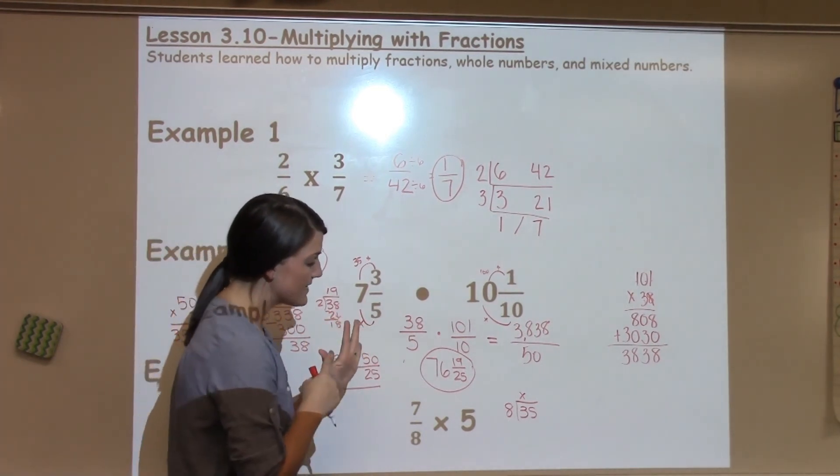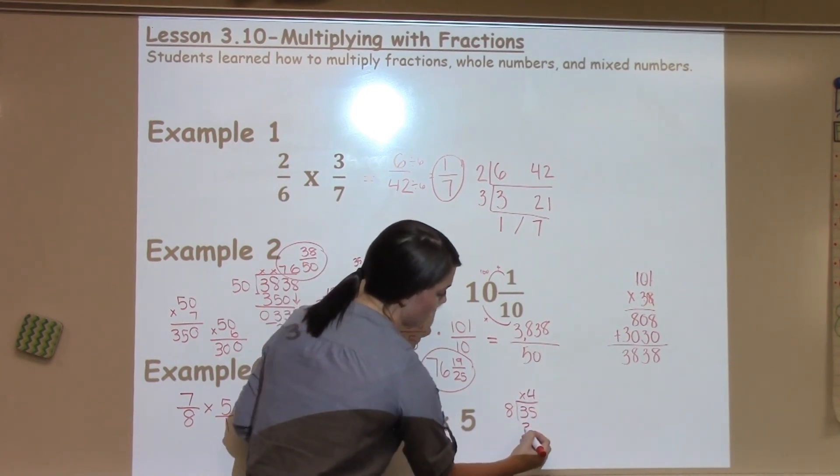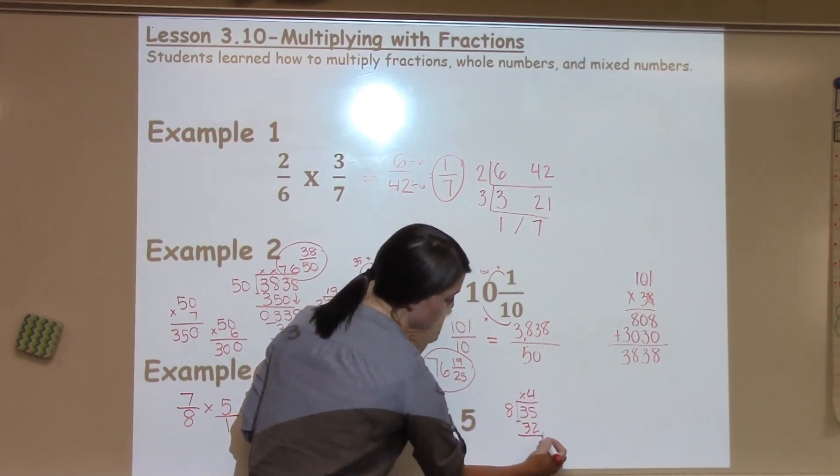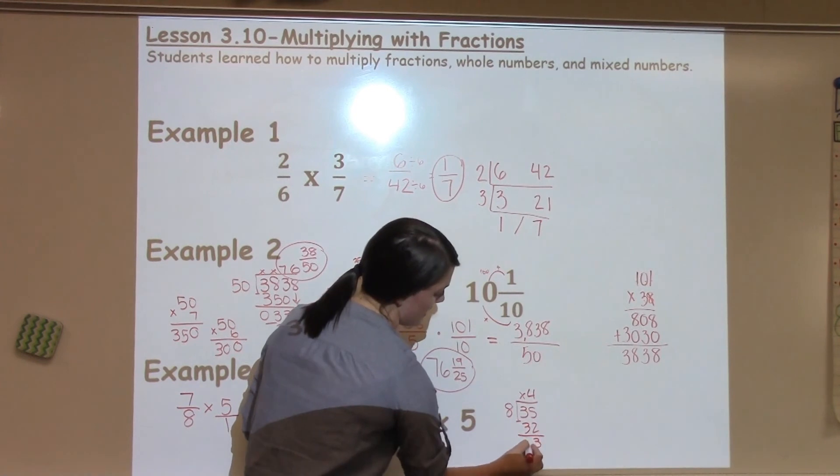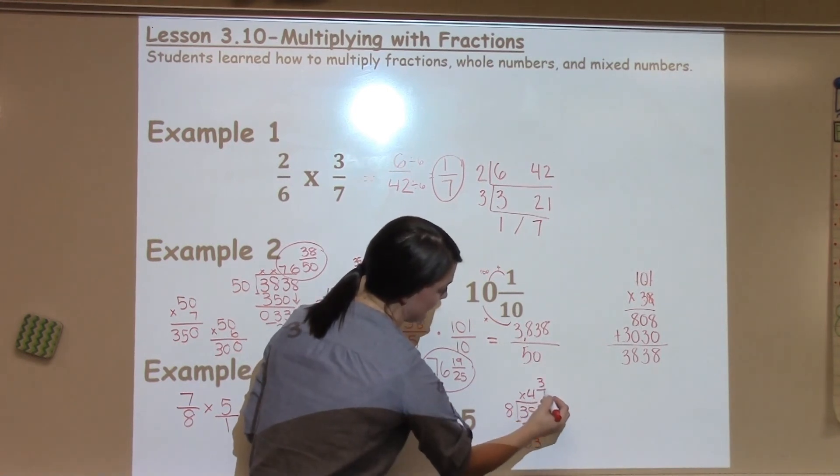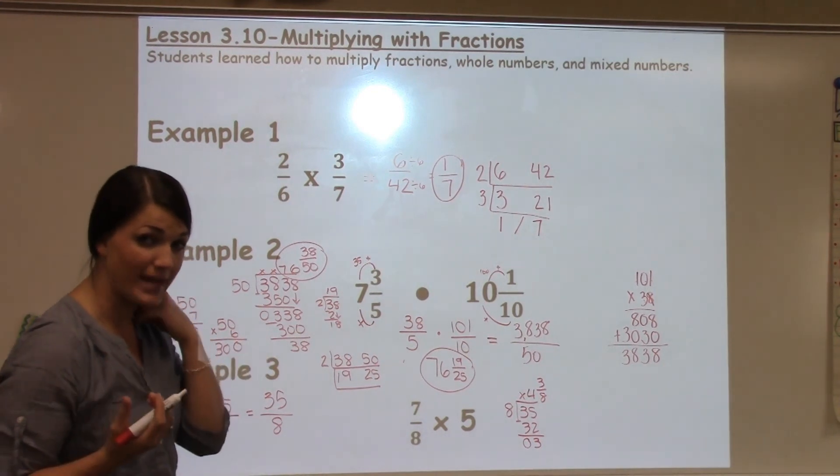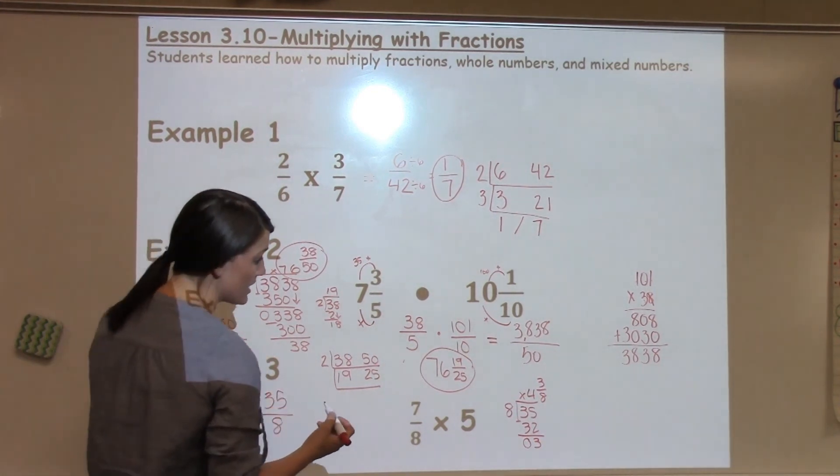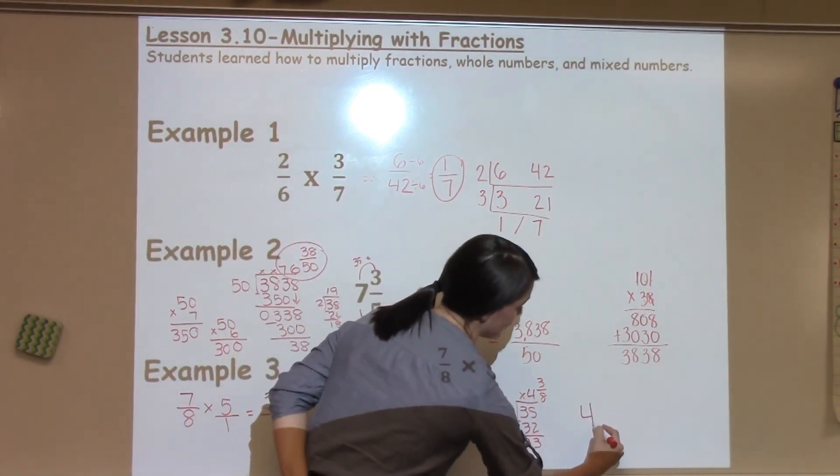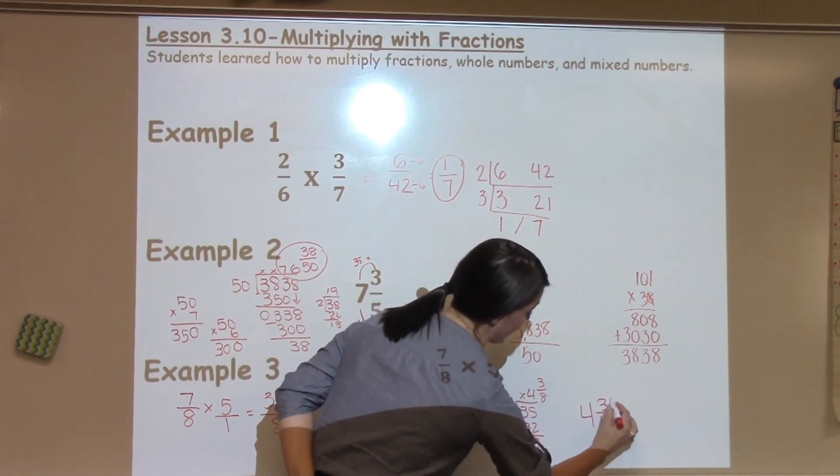8 times 5 gives me 40, so I'm going to stick with 8 times 4, which was 32. Get a remainder of 3/8. I cannot pull anything out of a 3 and 8, I cannot make that any simpler, so my final answer is 4 and 3/8.